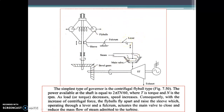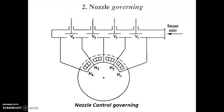The second method is nozzle governing, which controls the mass flow rate of steam supplied to the turbine. It is more efficient than throttle governing because the nozzles of the turbine are grouped into two or three groups, each group controlled by a steam control valve. Under full load conditions, all valves are fully open. When the load becomes more or less than the design value, the supply of steam is adjusted by varying the groups of nozzles to restore the original speed.